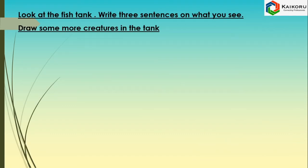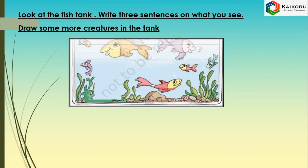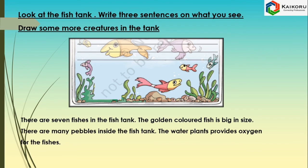Look at the fish tank. Write three sentences on what you see. Draw some more creatures in the tank. There are seven fishes in the fish tank. The golden colored fish is big in size. There are many pebbles inside the fish tank. The water plant provides oxygen for the fishes, which helps in breathing.